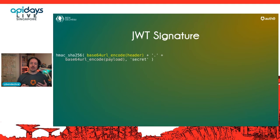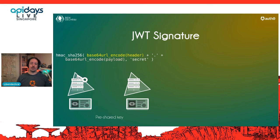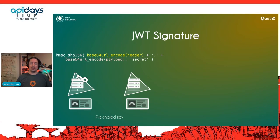If we take the payload and the header, base64-URL encode them both, join them together with a full stop, and run them through an HMAC-SHA256 hashing algorithm — which requires a pre-shared key — that pre-shared key needs to exist on the identity server to create the token. It also needs to exist on all systems that rely on that token: your API endpoints, your applications reading the identity token, the relying parties. They need that pre-shared key so they can recreate the signature to verify whether the content has been tampered with.